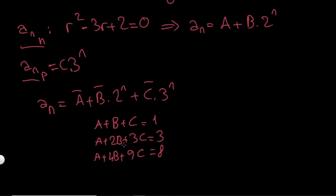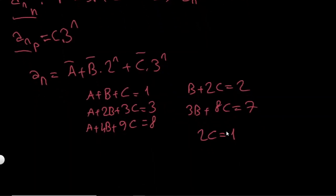And now I will just solve this equation. It's not hard to solve. So if I subtract first from second, I will get B plus 2C equals 2. And if I subtract first from third, I will get 3B plus 8C equals 7. So if I just multiply this by 3 minus 3 and add them, I will get 2C equals 1.